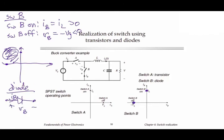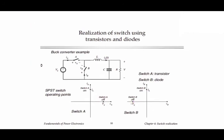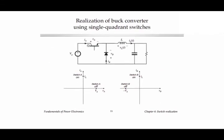Switch B must be realized with a diode. The choice of switch isn't arbitrary — we couldn't put a diode at switch A or a transistor at switch B. By doing this simple exercise we can systematically determine exactly how to realize the devices. The summary: switch A uses a BJT and switch B uses a diode. In the next lecture we'll consider two quadrant switches and see examples where that is needed.